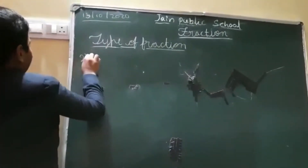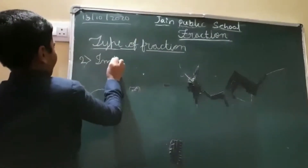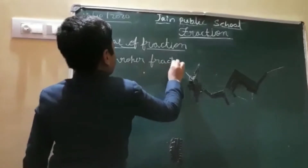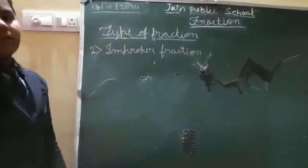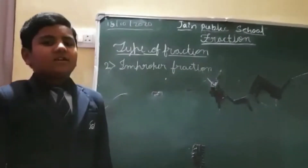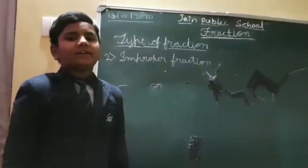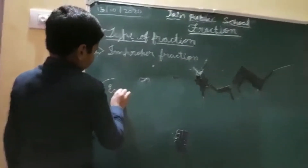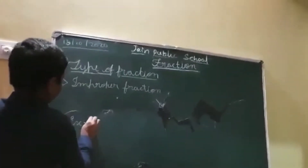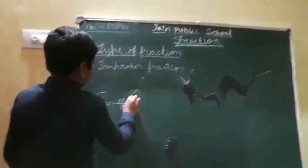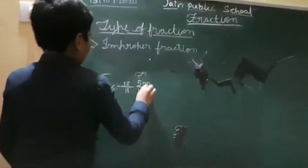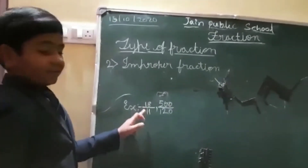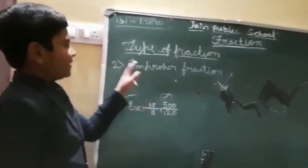Second one is improper fraction. A fraction in which the numerator is greater than the denominator is called an improper fraction. For example, 18 by 11. Here, 18 is bigger than 11, so it is called an improper fraction.